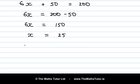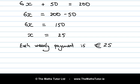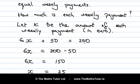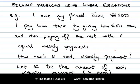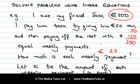So each weekly payment is 25 euro. Let's make sure we have answered the question and check our answer against the original problem statement. I originally owed my friend Jack 200 euro. I paid him off by giving him 50 euro and then 6 equal weekly payments. So we have 50 euro and 6 times 25 is 150. Adding those together we get 200, so we have confidence that we have the right answer.